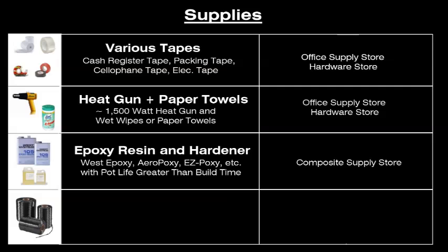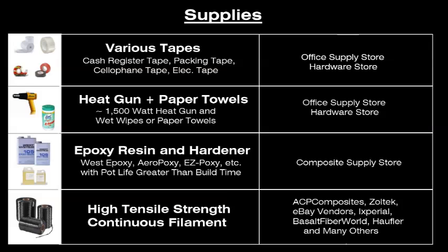Epoxy resin and hardener — there are many commercially available choices, but make sure that the pot life of the glue, that's the time before the glue starts to gel, is longer than the winding time of the final part. And of course, high tensile strength continuous filament material that can be dispensed from a reel. All of these supplies are not included in the X-Winder kit.